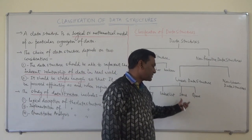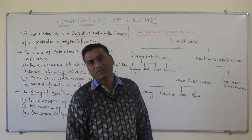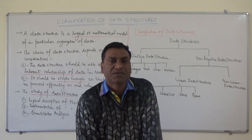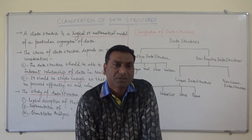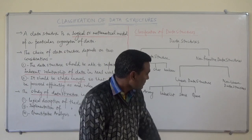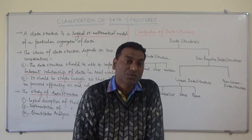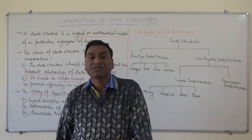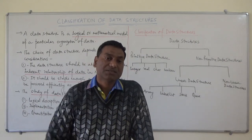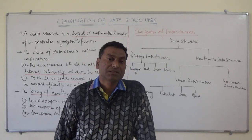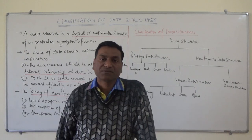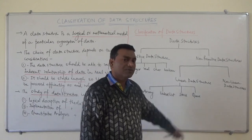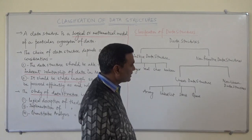Stack is also a linear data structure that is based on the last in first out system, or LIFO system — last come first serve. The fourth category is the queue, which is based on the real-time queues we normally see at railway stations and bus stations. It is based on the first in first out system, or first come first serve system. These are the four very popular categories.